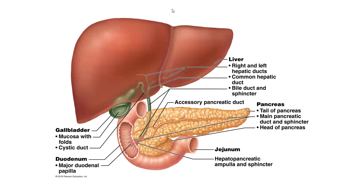Looking at these accessory organs: the liver and gallbladder — the gallbladder is down and underneath the liver — secrete bile via the bile duct into the duodenum. The pancreas is a soft organ that sits behind the stomach and also secretes into the duodenum to finish up digestion and aid in absorption. Remember, the duodenum is about the first foot of the small intestine where this occurs, and the jejunum is where most of the absorption happens. And that is the end of the digestive system.